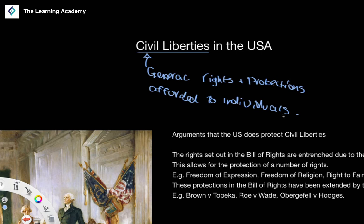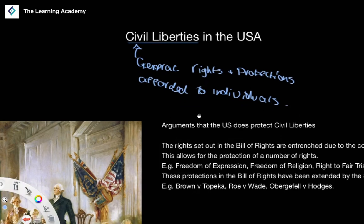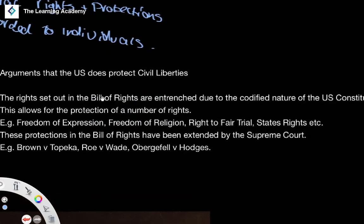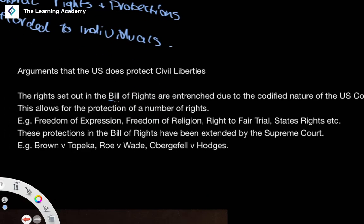So how does the US Constitution protect these liberties? There are a few arguments to suggest that it does, and there's a very strong case for protecting civil liberties in the USA. The first is the existence of the Bill of Rights, which consists of the first ten amendments of the US Constitution and protects a number of civil liberties.